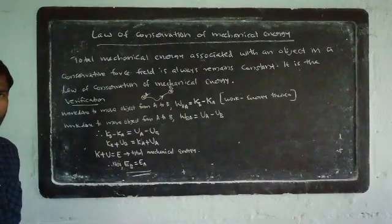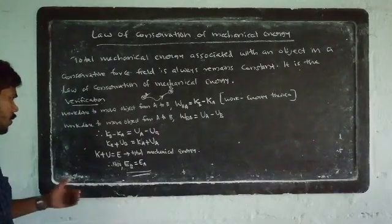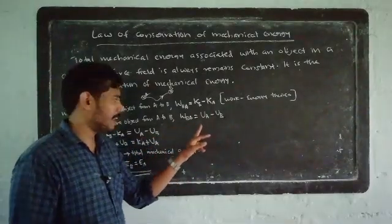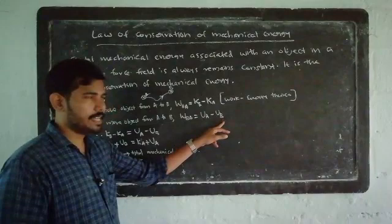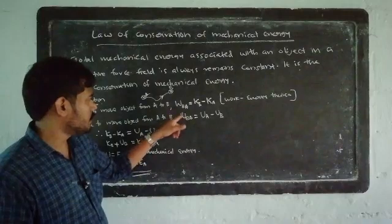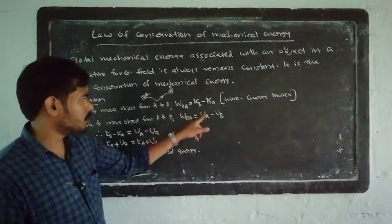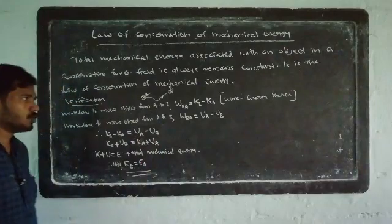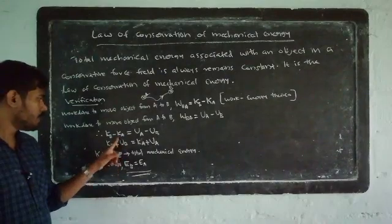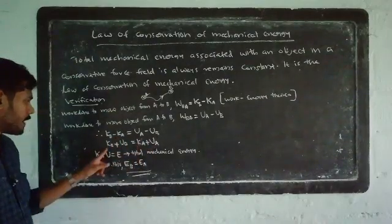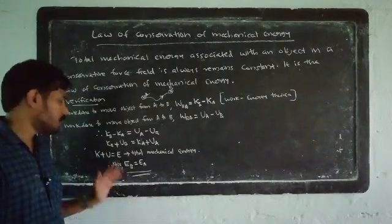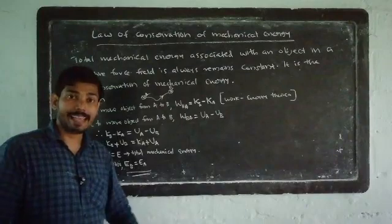We have the potential energy difference between two points. The work done to move an object from A to B, W_B equals UA minus UB, which equals initial potential energy minus final potential energy. From the two equations, LHS equals RHS, so KB minus KA equals UA minus UB, which gives KB plus UB equals KA plus UA.